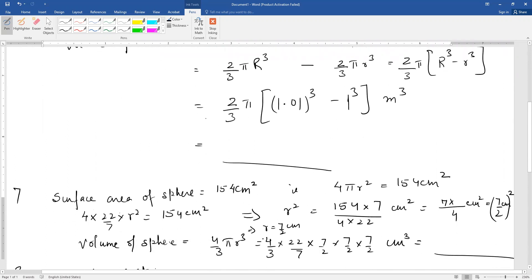Question number 7 is, find the volume of a sphere whose surface area is 154 cm². Very important question, frequently asked in the examination. Surface area of sphere is given as 154 cm².